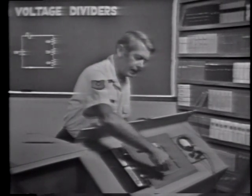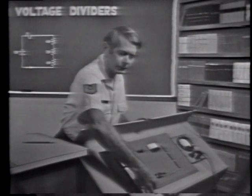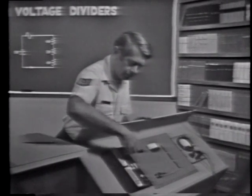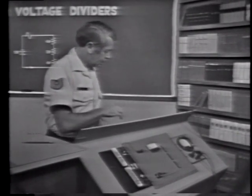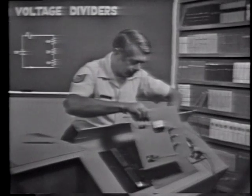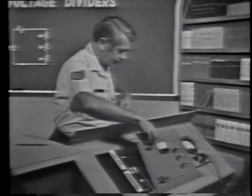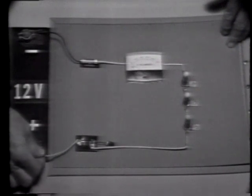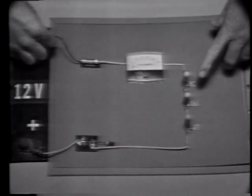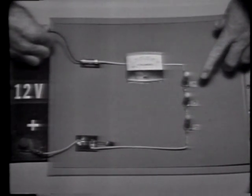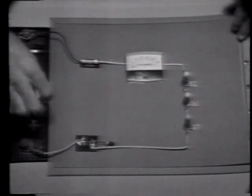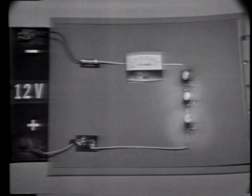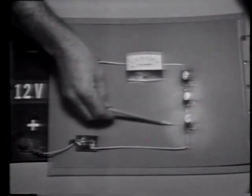To help clarify what takes place when a voltage divider is loaded, let's use a different trainer. In this case, we're using bulbs instead of resistors, but we should remember that these bulbs do have resistance. Therefore, when the switch is closed, current flows and the applied voltage is divided among the bulbs. Now let's load the circuit.